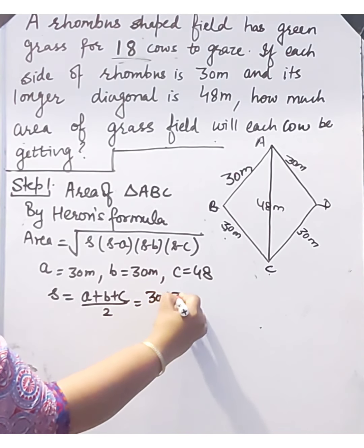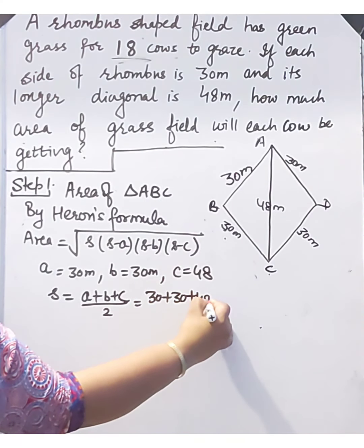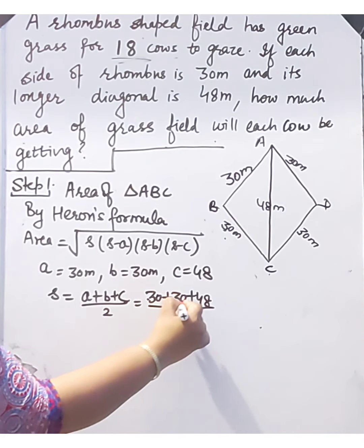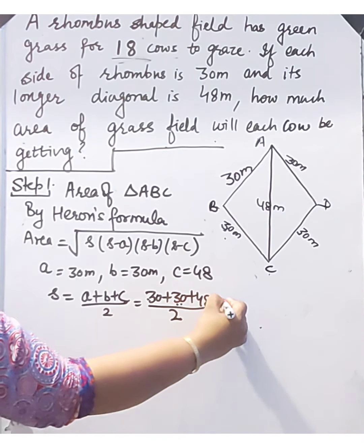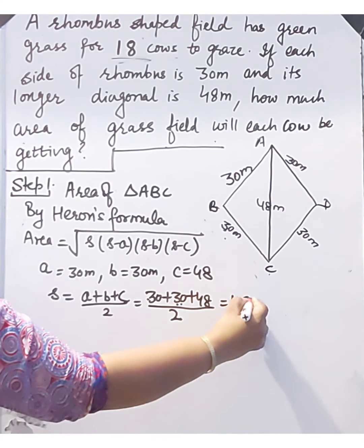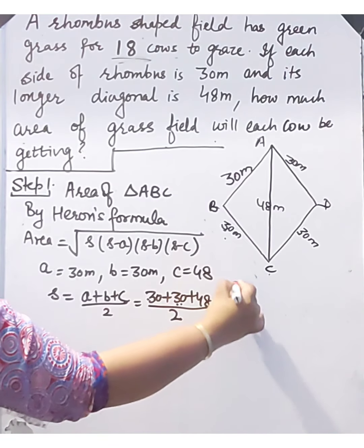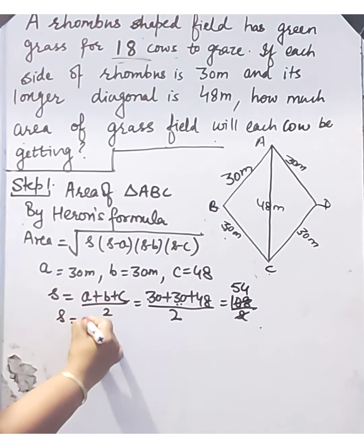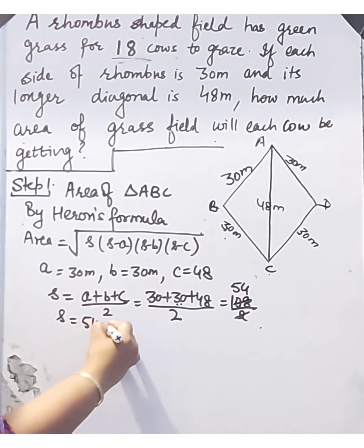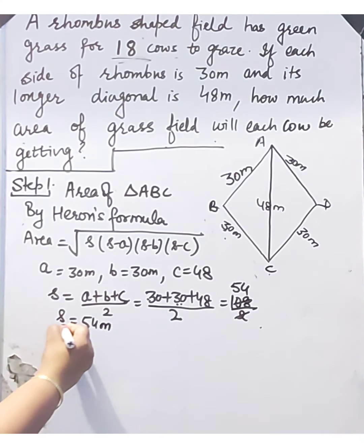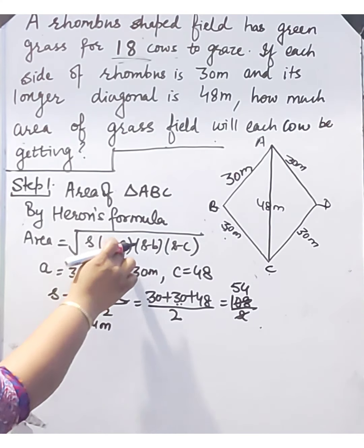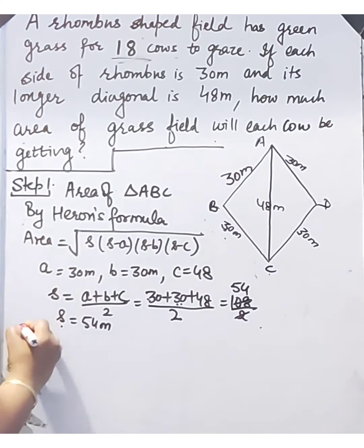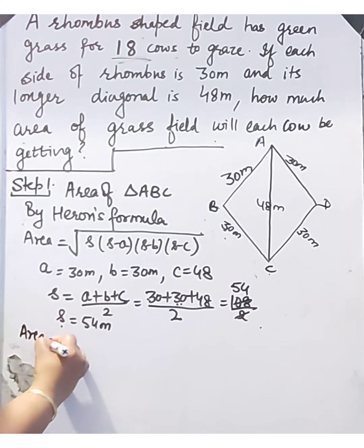So s = (30 + 30 + 48) / 2. That is 30 + 30 = 60, and 60 + 48 = 108, divided by 2. Therefore the semi-perimeter s = 54 meters. Now we put the values of s, a, b, and c into the formula.